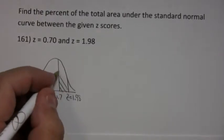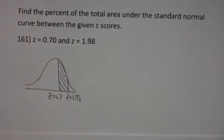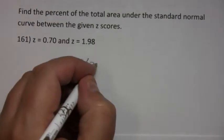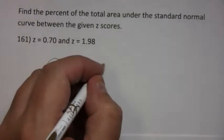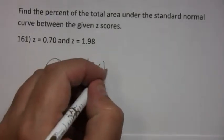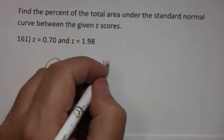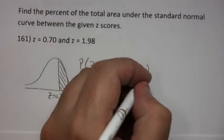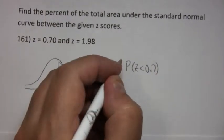So we're looking here. We look at the probability that z is less than the biggest number, and then we look at the probability that z is less than the smaller number, and we subtract the two.